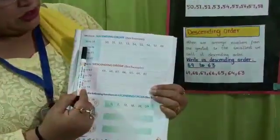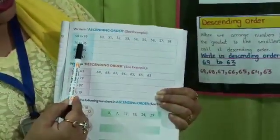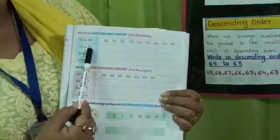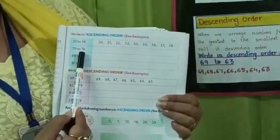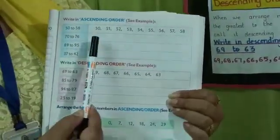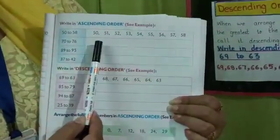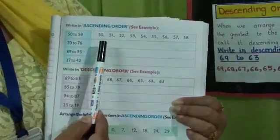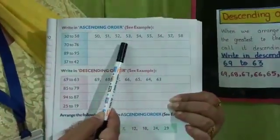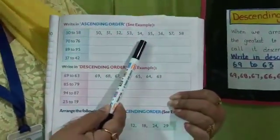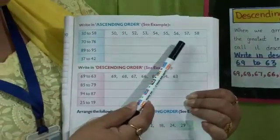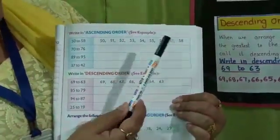Write numbers from 70 to 76. We write it as 70, 71, 72, 73, 74, 75, 76.